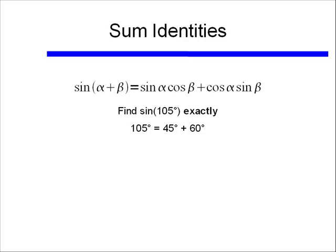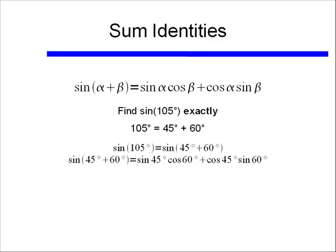We know what the sine and cosine of 45 degrees and 60 degrees are, so if we use our sum identity for sine, we'll find that the sine of 105 degrees is equal to the sine of the quantity 45 degrees plus 60 degrees. So the trick to solving a question like this is being able to recognize 105 degrees as the sum of two of our known angles, like 45 degrees and 60 degrees. Using the sum identity, the sine of 45 degrees plus 60 degrees equals sine of 45 degrees times cosine of 60 degrees, plus cosine of 45 degrees times sine of 60 degrees.